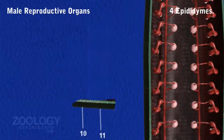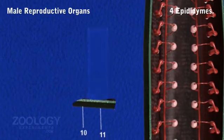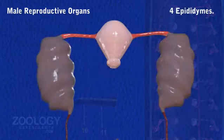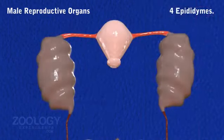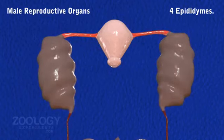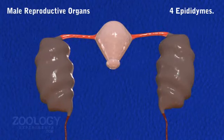Epididymus: Both the vasa deferentia in the 10th segment swell to form a highly convoluted mass called the epididymus. The two epididymus serve to store spermatozoa brought by the vasa deferentia.